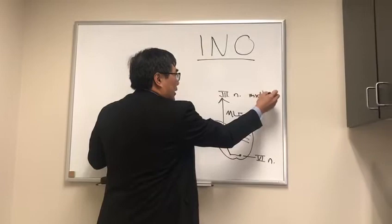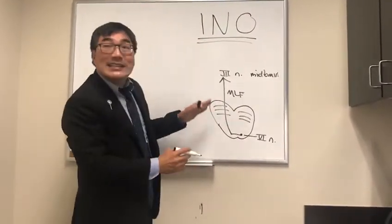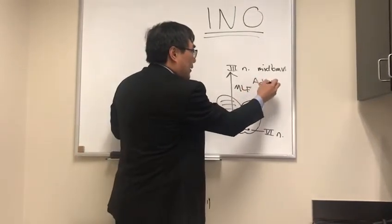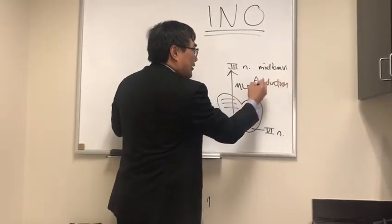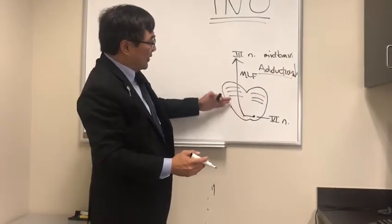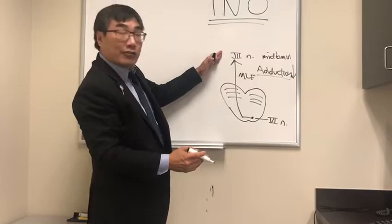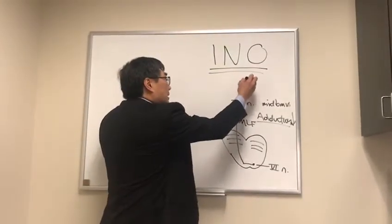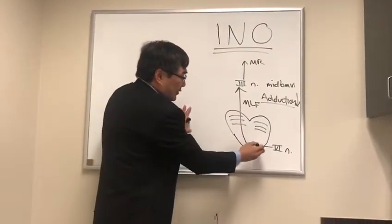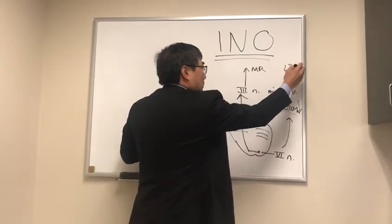In a regular internuclear ophthalmoplegia, you get an adduction deficit. The reason there's an adduction deficit is because the medial longitudinal fasciculus is carrying the signal from the sixth nerve nucleus to the contralateral third nerve, which is innervating the medial rectus muscle — versus the sixth nerve, which is innervating the lateral rectus muscle.